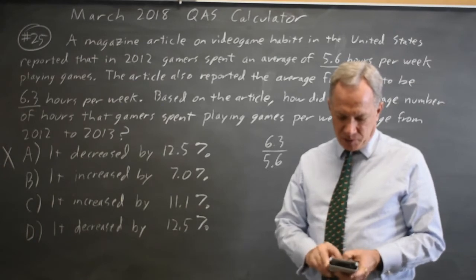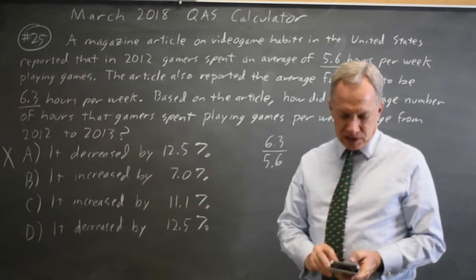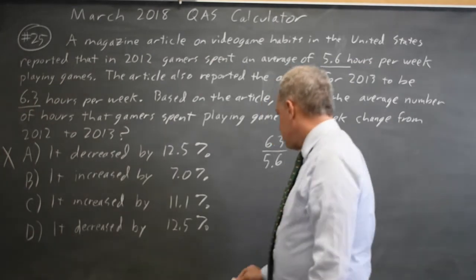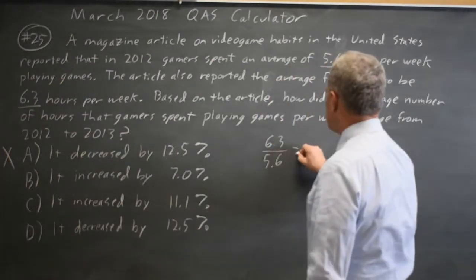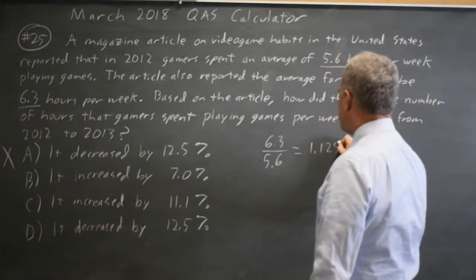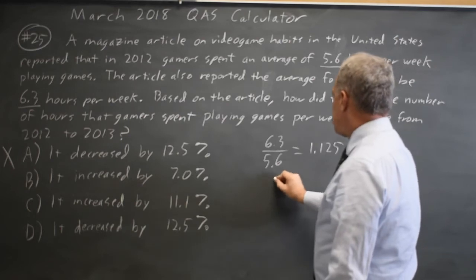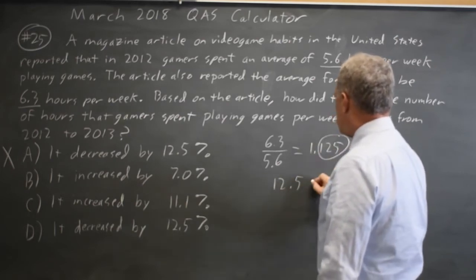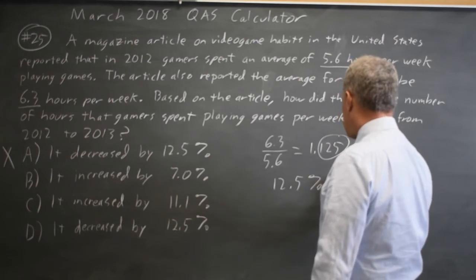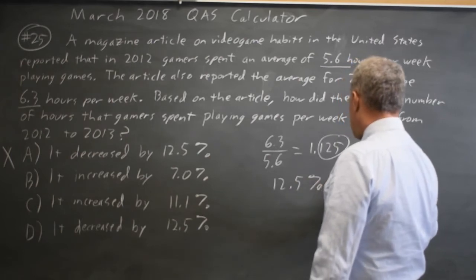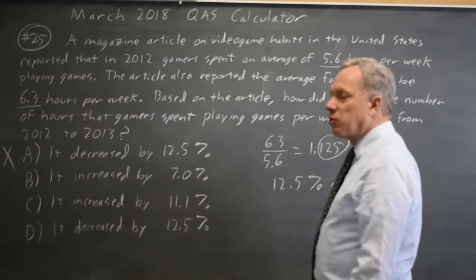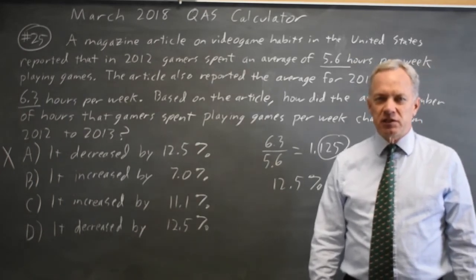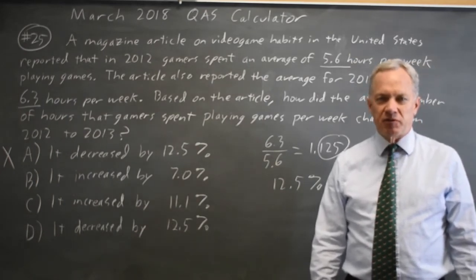6.3 over 5.6 is 1.125, and that is a 12.5% increase. If the ratio was 1.0 that would be 0% increase, so the percentage increase is the decimal after the 1.